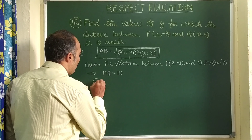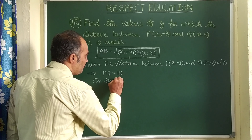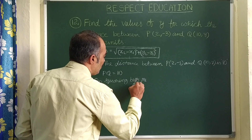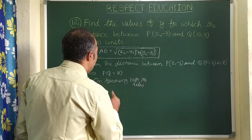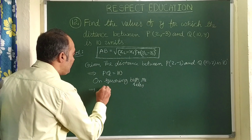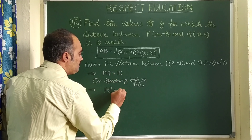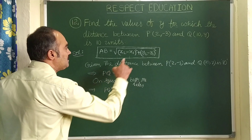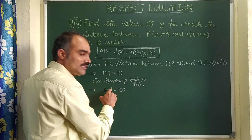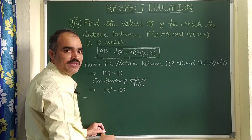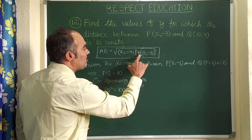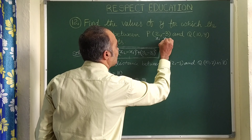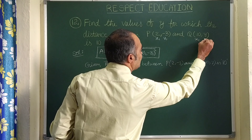On squaring both sides, PQ² = 10² = 100. When we do the square, the square and the square root both get cancelled. So directly we can write: x2 - x1 whole square plus y2 - y1 whole square. Let us label P as (x1, y1) and Q as (x2, y2).